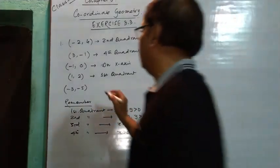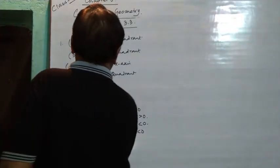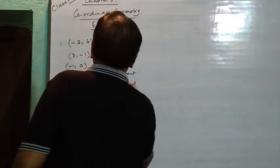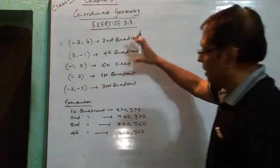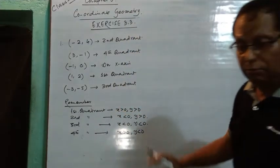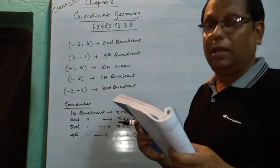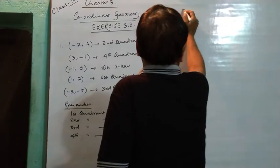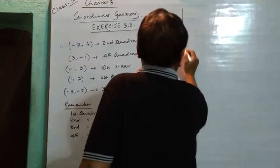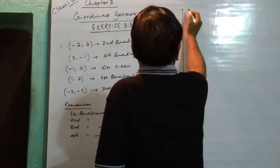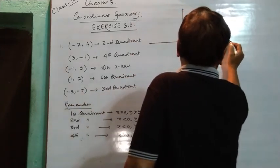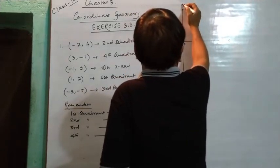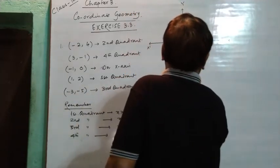X negative, Y negative — third quadrant. So in order to write these answers, you have to remember the sign rules for each quadrant. Now the second part of the same question says verify your answer by locating them on the Cartesian plane. We will draw two mutually perpendicular lines: X–O–X dash and Y–O–Y dash.